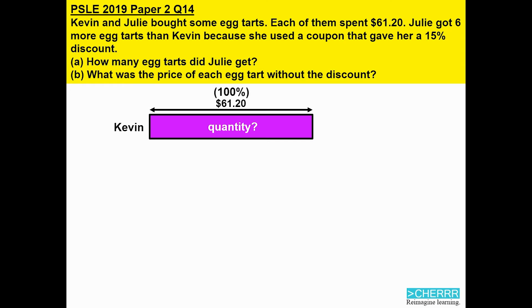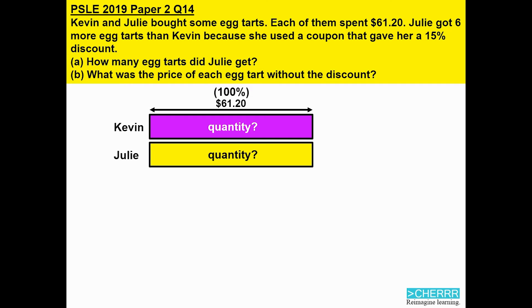Moving on to Julie. Julie obviously bought what Kevin has bought, and this quantity we do not know. However, we do know that she would have a discount. So with a 15% discount for this same quantity, she would actually only pay 85%, which will definitely be less than $61.20.